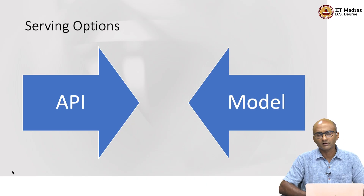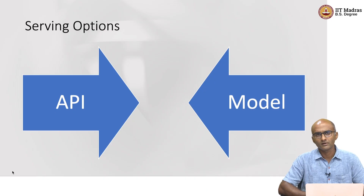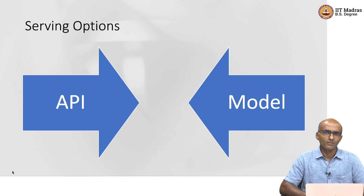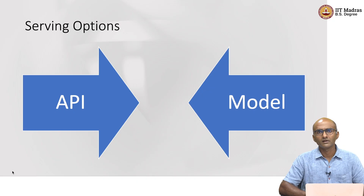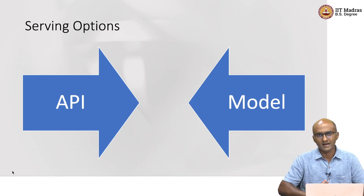The other way in which the model can be served is by wrapping it inside an API — an application programming interface — which makes it available for any downstream consumers of the model to directly use what's called the REST protocol and make RESTful calls against that API to get predictions. These are the only two fundamental types. You might find a lot of discussion online or in various data science forums about serving options, but fundamentally the thought process revolves around only these two mechanisms.